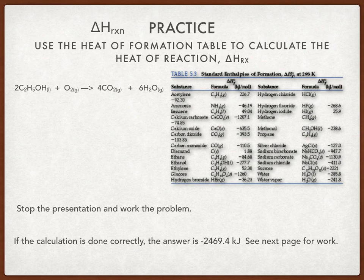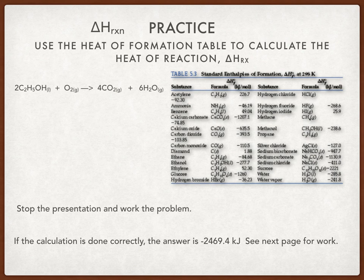Go ahead and stop the presentation and work the problem out. Before moving on: notice that oxygen has a value of zero. Carbon dioxide is in the middle of the table at negative three ninety-three point five. The water is a gas — the little 'g' tells you it's water in the gas phase — and that's the last entry, with a value of negative two forty-one point eight.